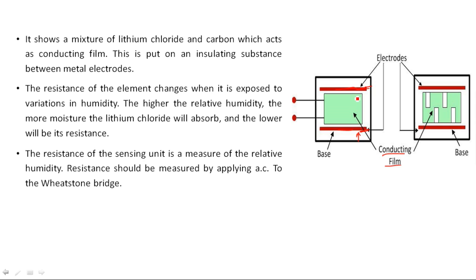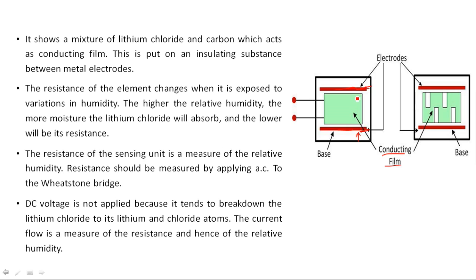The resistance of the sensing unit is a measure of relative humidity. The resistance should be measured by applying AC to the Wheatstone bridge — DC voltage is not applied because it tends to break down lithium chloride into its lithium and chloride atoms. If DC voltage is applied, the lithium chloride will separate into lithium and chloride atoms. The current flow is a measure of the resistance and hence of the relative humidity.